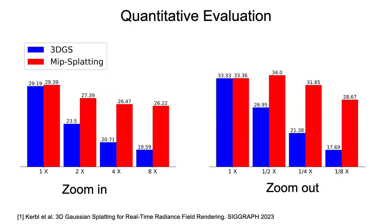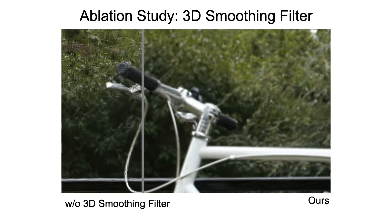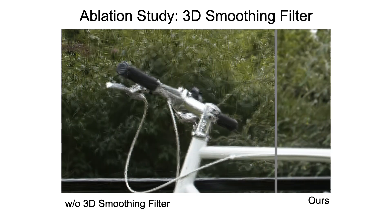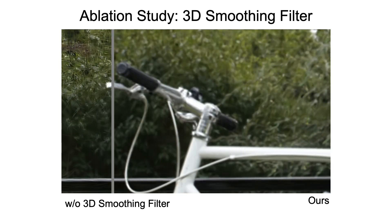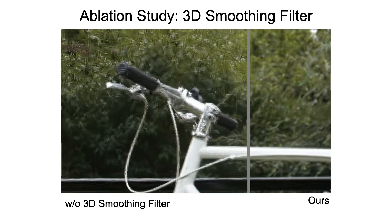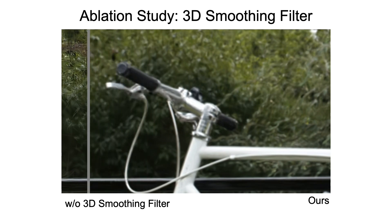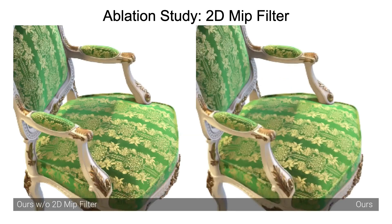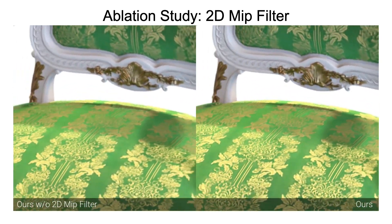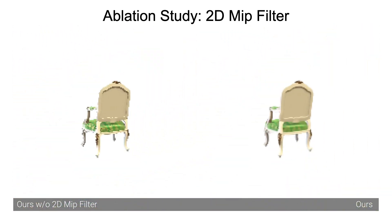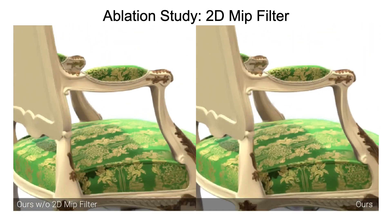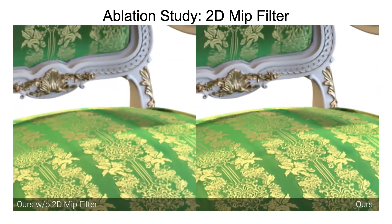Our quantitative evaluations show that MIP splatting outperforms 3DGS consistently across multiple scales. Our ablation study shows that without a 3D smoothing filter, strong high-frequency artifacts are presented when rendering high-resolution images, while our 3D smoothing filter eliminates the high-frequency artifacts effectively. Further, without a 2D MIP filter, the rendering shows strong aliasing artifacts due to the lack of an anti-aliasing mechanism, while using our 2D MIP filter produces alias-free renderings.